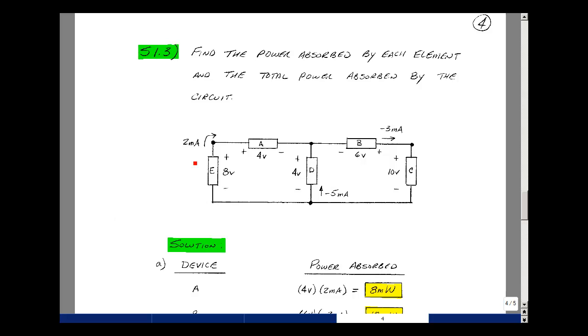For device B, the current is leaving the plus terminal. If we change the direction of that current, this becomes plus 3 milliamps, and the power absorbed would be 3 milliamps times 6 volts, or 18 milliwatts.